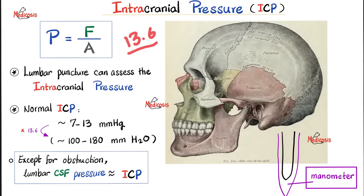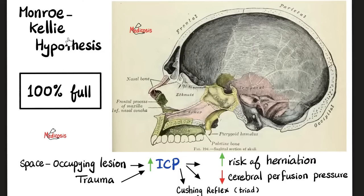We can measure intracranial pressure via lumbar puncture, connecting the needle to a manometer. Remember the Monroe-Kelly hypothesis: the skull is like a box that is 100% packed and stuffed — not a single inch of empty space. Therefore, anything that develops inside the skull, like a brain tumor or abscess, will have to take the space of something else, meaning pressure must rise. However, in patients with normal pressure hydrocephalus, there is no space-occupying lesion — no tumor, no abscess.